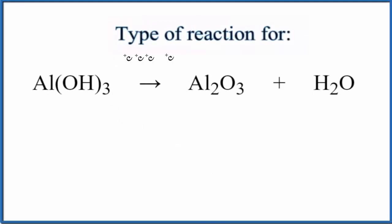In this video, we'll take a look at the type of reaction for Al(OH)₃ breaking down into Al₂O₃ plus H₂O. So this is aluminum hydroxide.